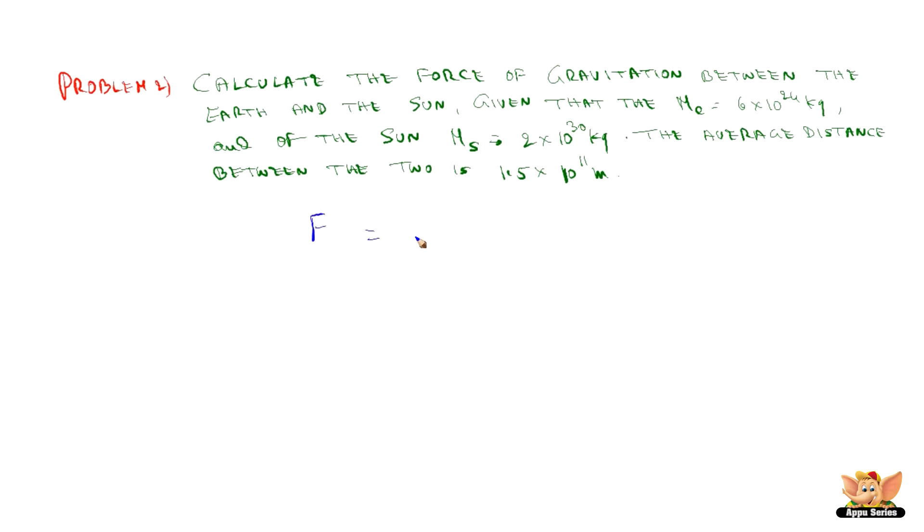Now we know gravitational force F = G·m₁·m₂/R², where R is the distance between the two. Substituting the values where G is 6.7×10⁻¹¹ N·m²·kg⁻², times the mass of the earth and mass of the sun. Mass of sun is 2×10³⁰ kg, mass of earth is 6×10²⁴ kg, divided by R² where R = 1.5×10¹¹ m.